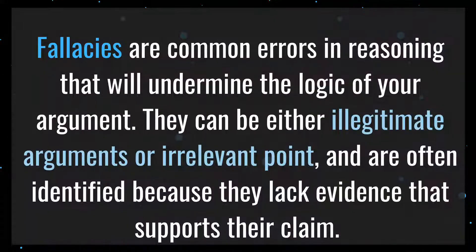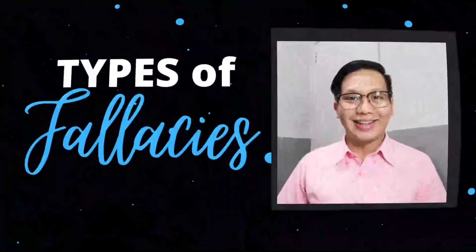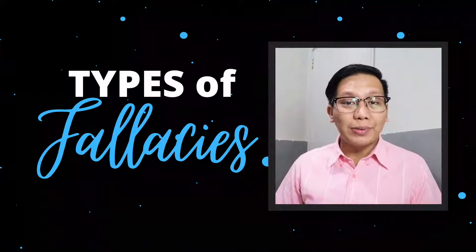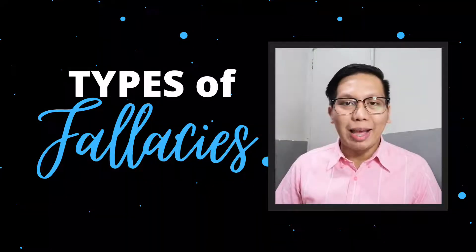Fallacies are common errors in reasoning that will undermine the logic of your argument. They can be either illegitimate arguments or irrelevant points, and are often identified because they lack evidence that supports their claim. Avoid these common fallacies in your own arguments and watch for them in the arguments of others. There are 12 types of logical fallacies — here are their definitions and examples.